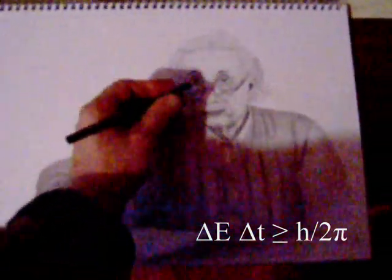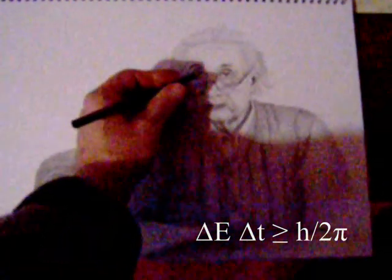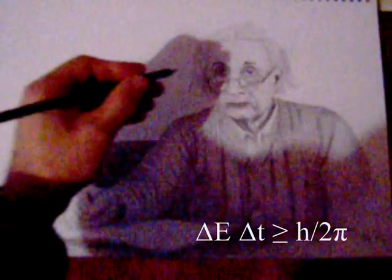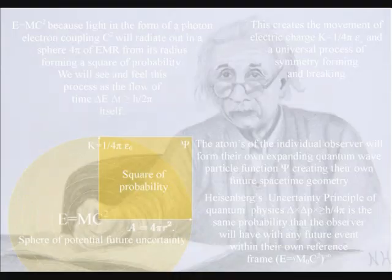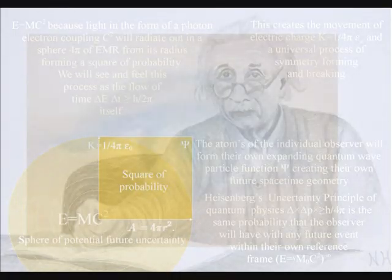An artist will take energy and time to create a work of art because the atoms of the hand and eye have bonded together, forming the movement of electric charge and creating their own potential future. Creation is truly in the hand and eye of the beholder in this theory.